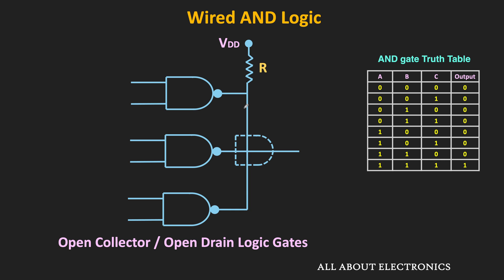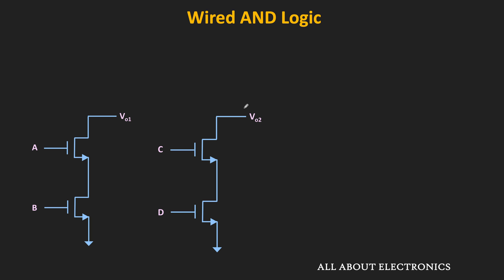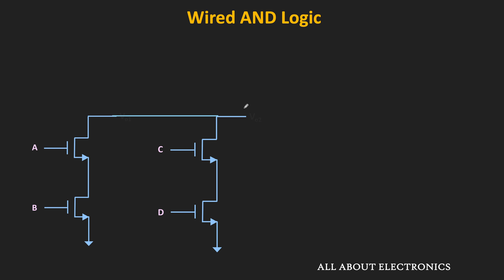To understand this more clearly, let's take the example of open drain logic gates designed using NMOS transistors. We have an open drain NAND gate designed using NMOS transistors, where the outputs of two NAND gates are connected together using a pull-up resistor. The wired output of these two logic gates will be Vout.